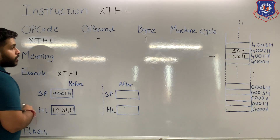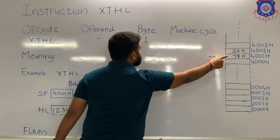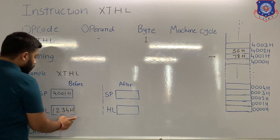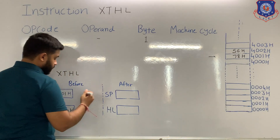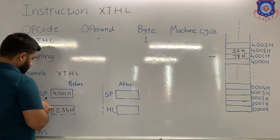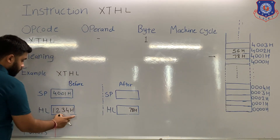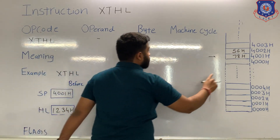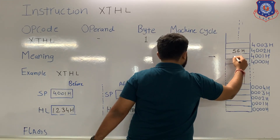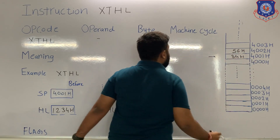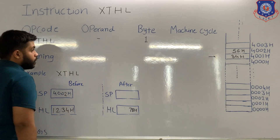Right now the stack pointer is pointing at 4001H, so the data present at 4001H — that is 78H — will be exchanged with the lower byte of the HL pair. So 78H will be transferred to the lower byte of the HL pair, and 34H will be transferred to the stack where the stack pointer is pointing. After that, the value of the stack pointer will be incremented by 1.